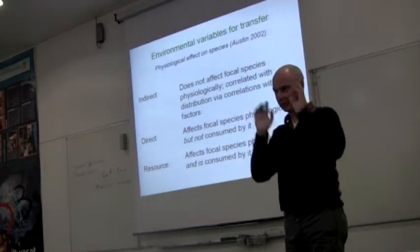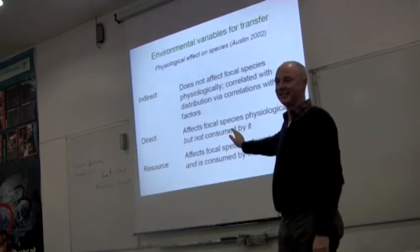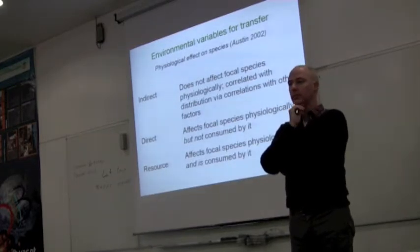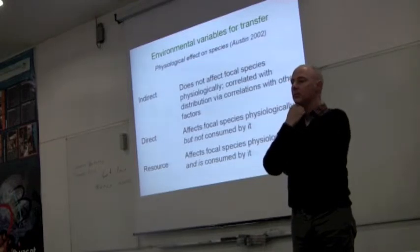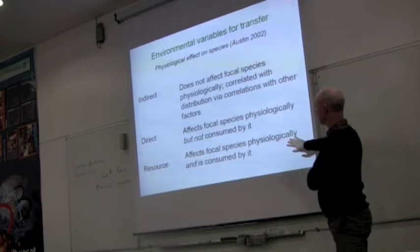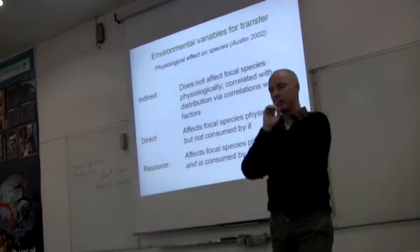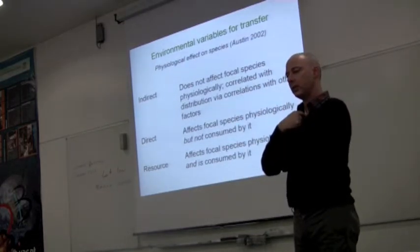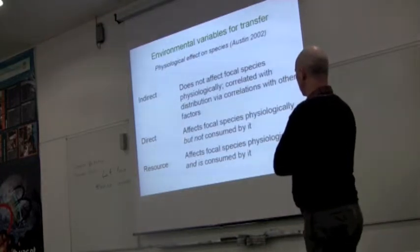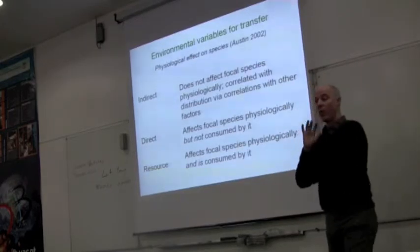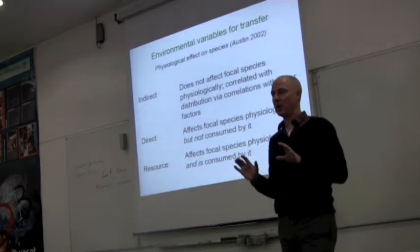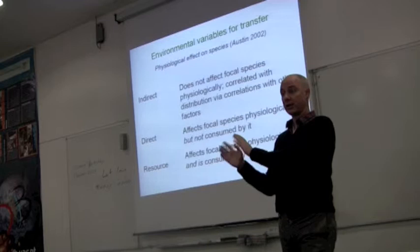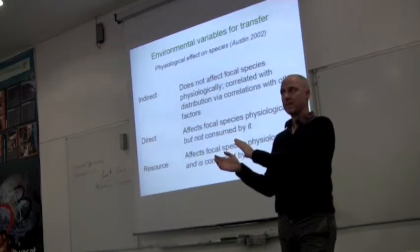There's a table in the paper that lets you see all of them at the same time. Regarding whether these factors are strictly physiological: if we're modeling the prey, I would say the predator would be a direct variable because it affects survival. Austin was a botanist and was explicitly thinking from the perspective of plants, but these categories are also useful for animals — you may have to think about 'physiologically' in a bit broader terms.